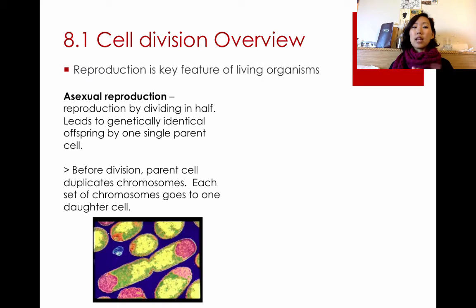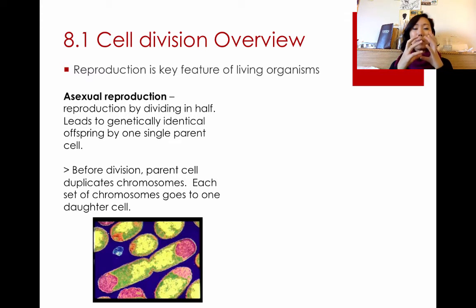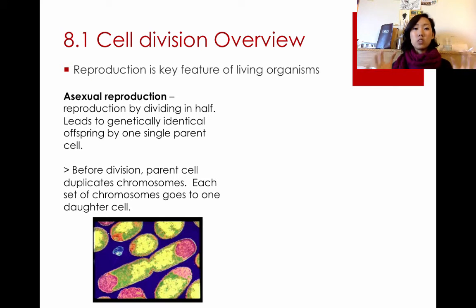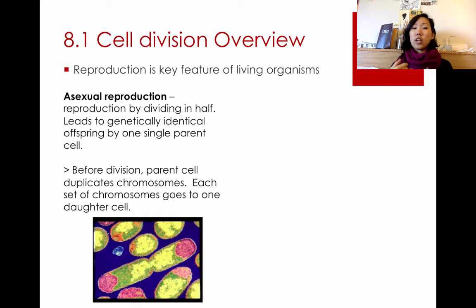The first one is asexual reproduction. This is when the parent cell genetically replicates its chromosomes and its DNA, and then divides into two daughter cells which are exactly the same as the parent cell — identical genetically and in all ways.